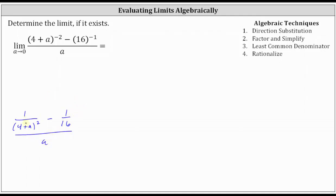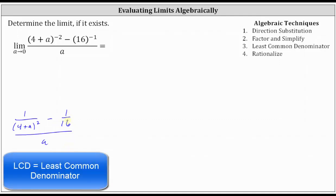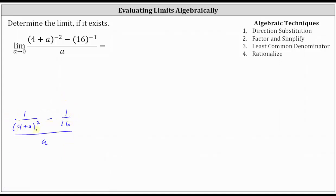Now to begin simplifying, we could subtract the fractions in the numerator, but a faster way to simplify a complex fraction is to multiply the top and bottom of the complex fraction by the LCD of the fractions in the numerator. The LCD is going to be 16 times the square of the quantity four plus a. So now we will multiply the numerator and denominator of the complex fraction by 16 times the square of four plus a.